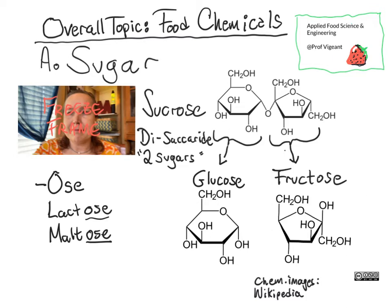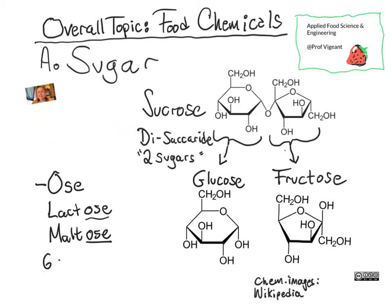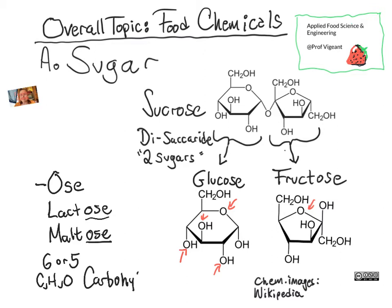Sugars are generally six- or five-sided rings, as you can see looking at glucose or fructose, and they're made up of carbon, hydrogen, and oxygen. If you look carefully at these rings, you'll see oxygen is part of the ring and also occurs in a number of spots outside of the ring. This earns them the name carbohydrate.